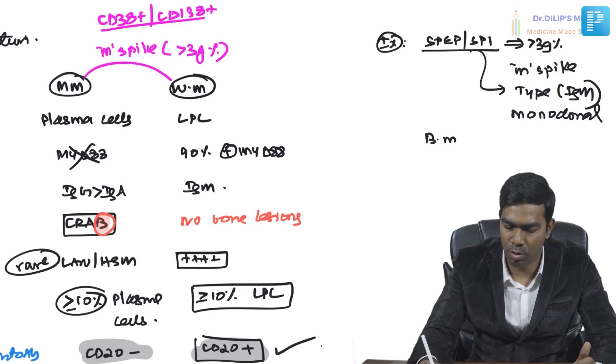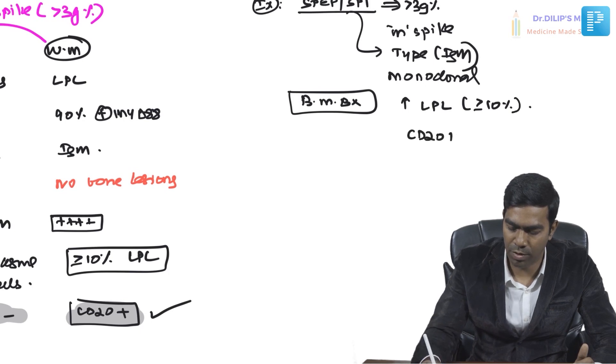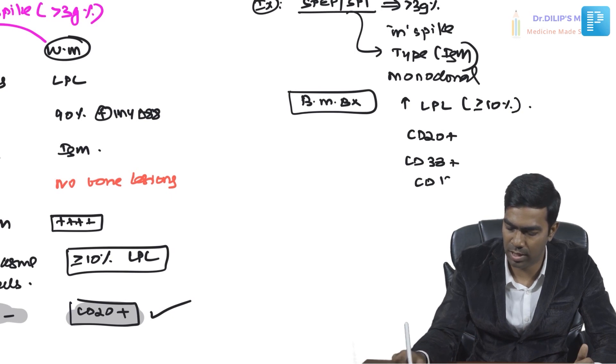The 24-hour urine protein is not very useful in Waldenström's because Bence Jones proteins are seen in less than 20% of patients, unlike multiple myeloma. Bone marrow biopsy and aspiration will show increased lymphoplasmacytic lymphocytes, more than 10% in the bone marrow. Phenotyping confirms these cells are CD20 positive, CD38 positive, and possibly CD138 positive.